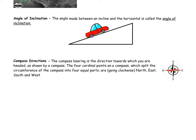Another one is called the angle of inclination. This is the angle between an incline — you can see how this car is on an incline — and the horizontal, referring to this angle in here. The other thing you might see sometimes is compass directions. The compass bearing is the direction towards which you are headed as shown by the compass. The directions are north, east, south, west — starting north and going clockwise. Those might come into play in some of our questions.